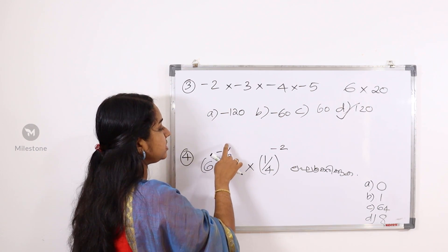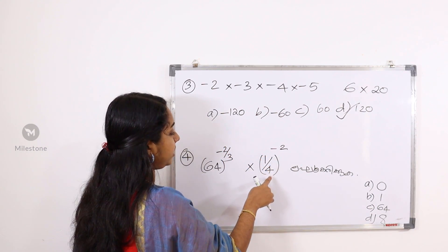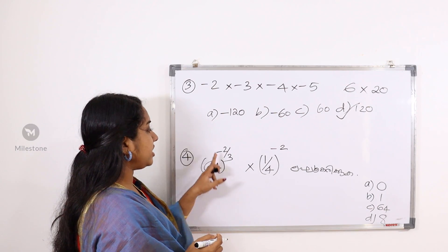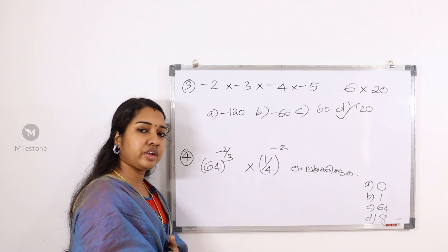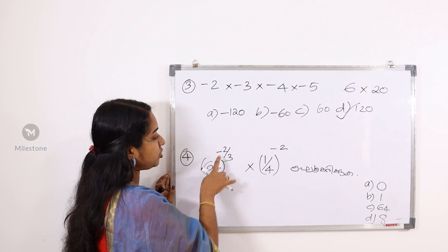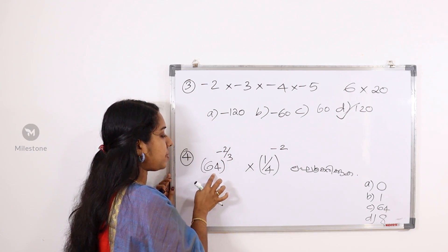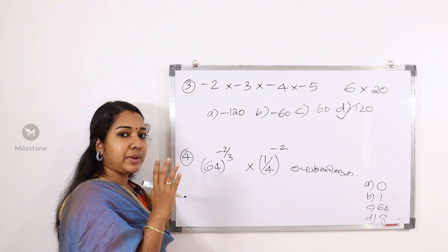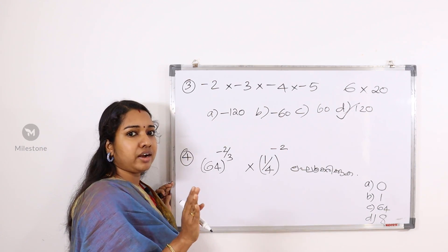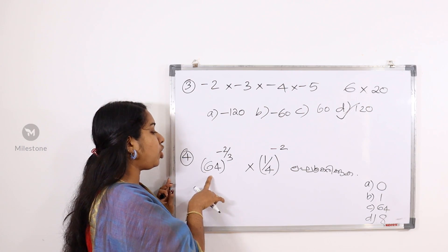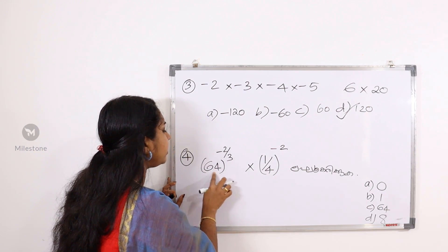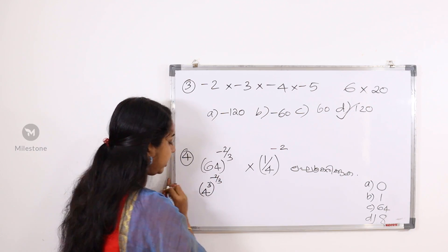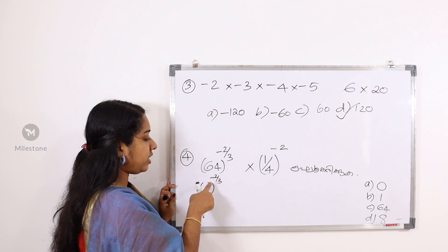Next question: 64 raised to minus 2 by 3, into 1 by 4 raised to minus 2 by 3. So 64 raised to minus 2 by 3. I have done a few questions in a previous video. I will try to solve this — finding the cube root of 64.